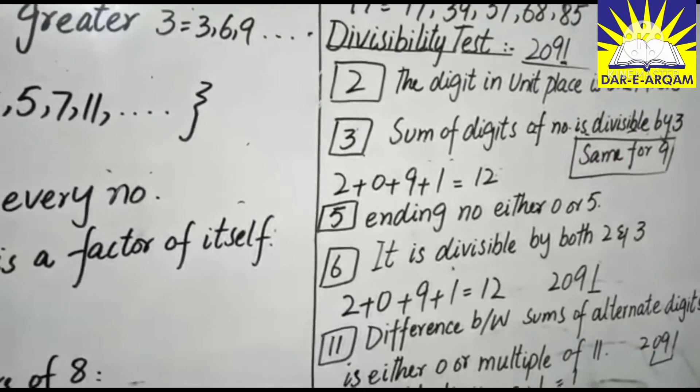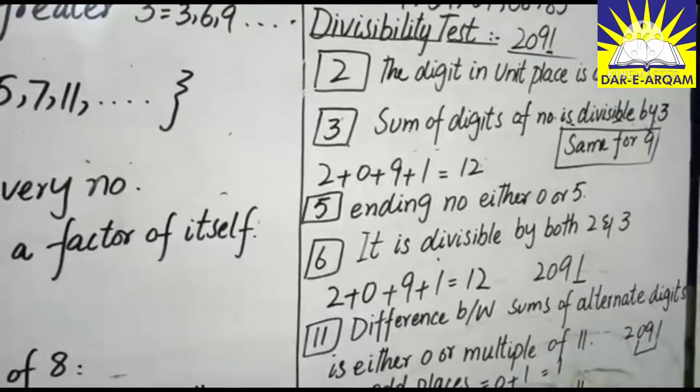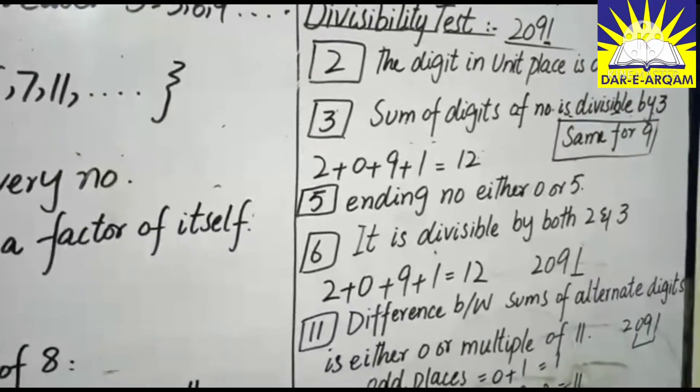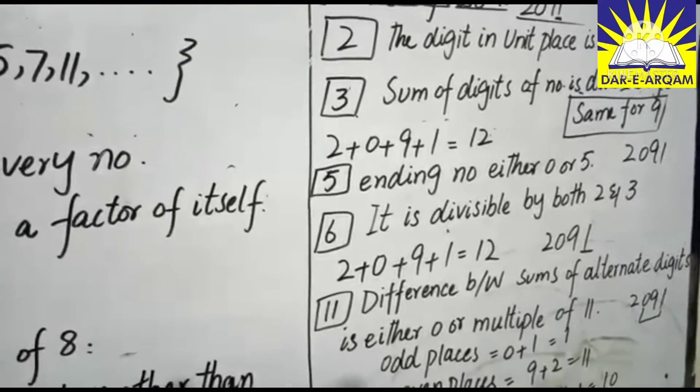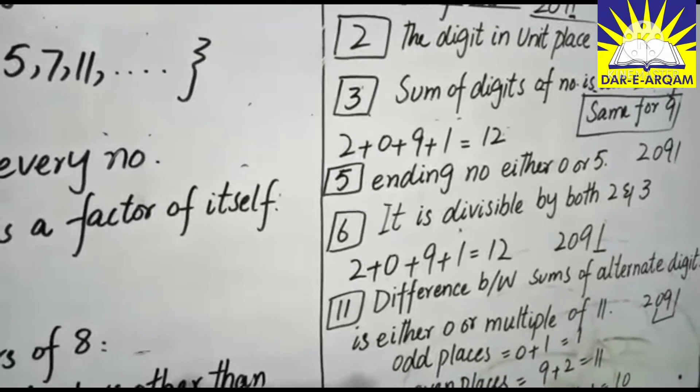Next 5, ending number is either 0 or 5, means that last unit place is either 0 or 5. So then number is divisible by 5.